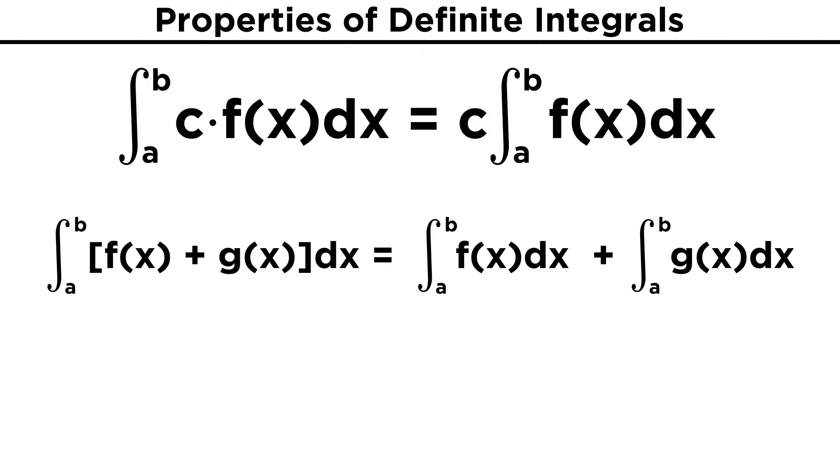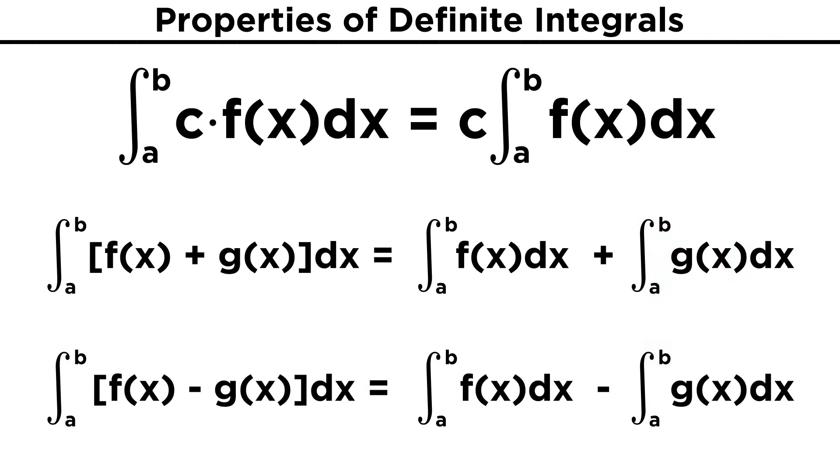Then we have the property that says that the integral of a sum of functions over some interval is equal to the sum of their integrals over the same interval. So the integral of f(x) + g(x)dx equals the integral of f(x)dx plus the integral of g(x)dx. The same goes for the difference of functions, we just change these plus signs to minus signs.